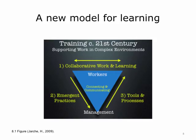The main objective of the new training department is to enable knowledge to flow in the organization. The primary function of learning professionals within this new work model is connecting and communicating based on three core processes: facilitating collaborative work and learning amongst workers, especially as peers; sensing patterns and helping to develop emergent work and learning practices; and working with management to fund and develop appropriate tools and processes for workers.